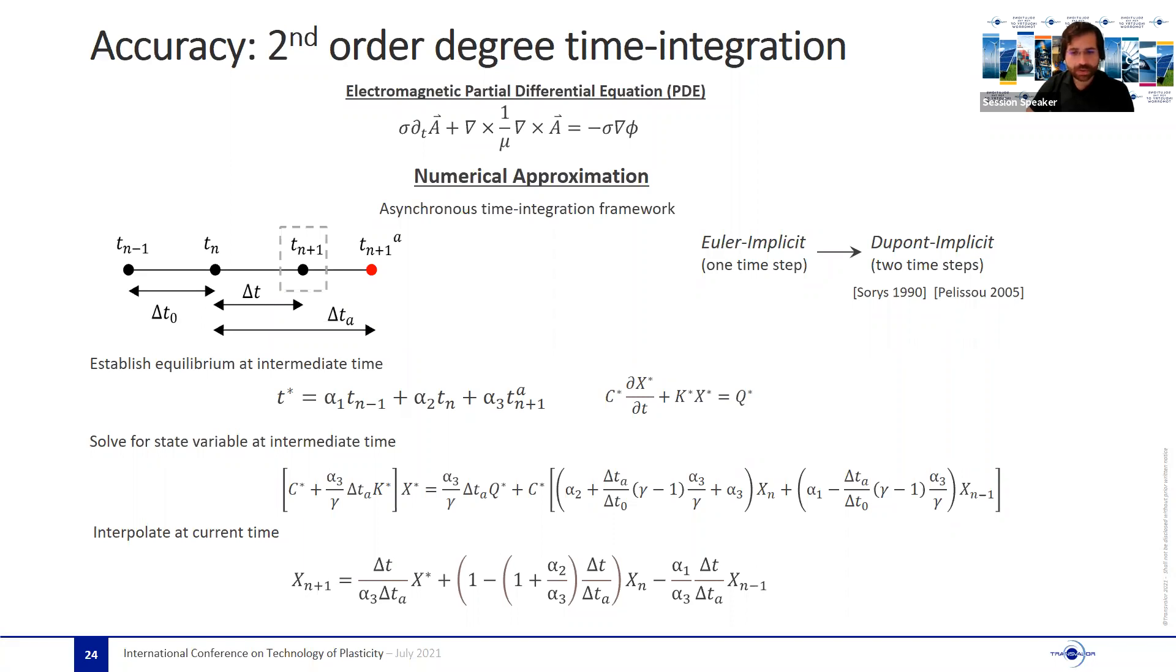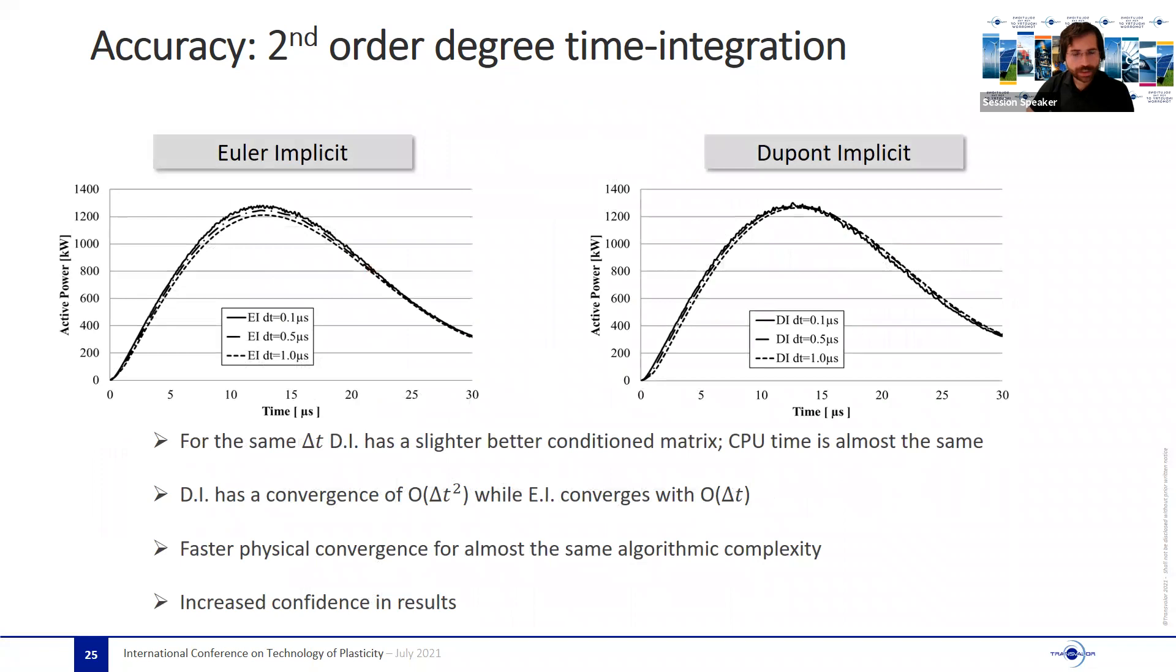An excellent compromise was a method developed back in the 90s and already used in our thermal solver. It is an asynchronous time integration method that enforces equilibrium at an intermediate time step, and that uses two previous time steps for propagating the evolution of the state field. It actually creates a family of methods, among which we can find the Euler implicit and Crank-Nicholson methods, but its most robust version comes with the Dupont implicit methods, given by a specific combination of the numerical parameters.